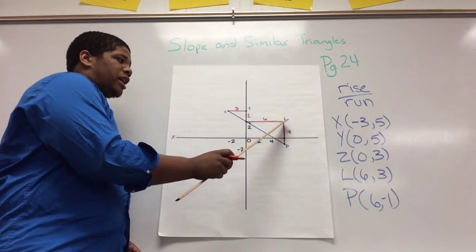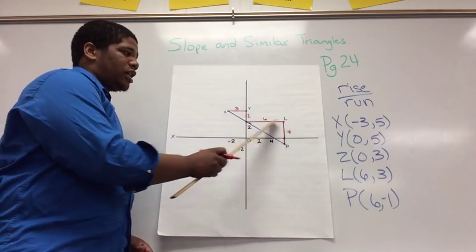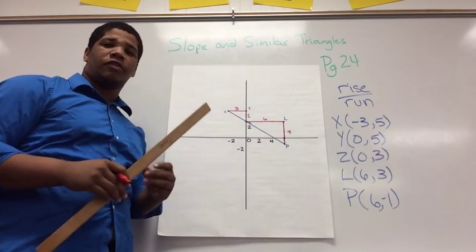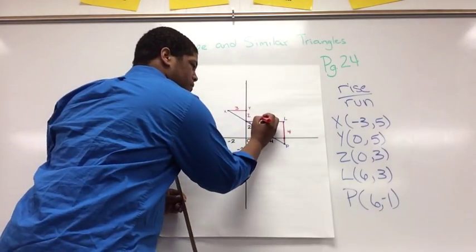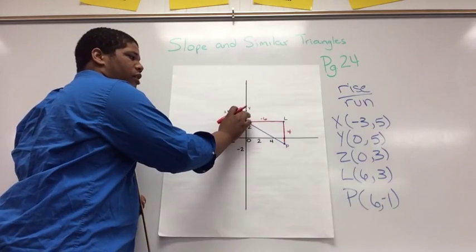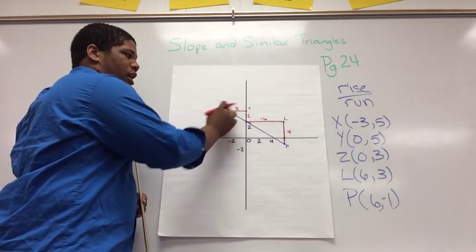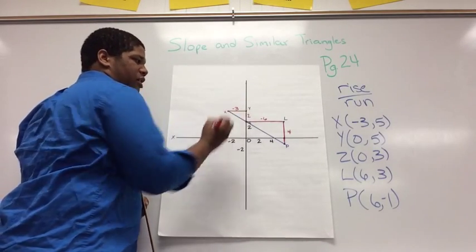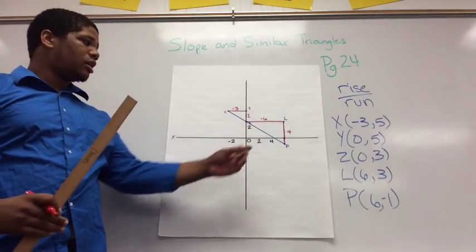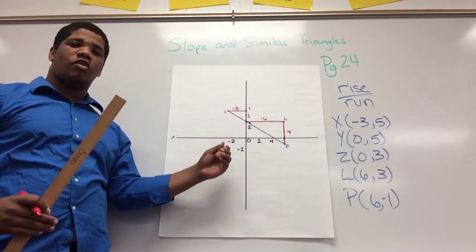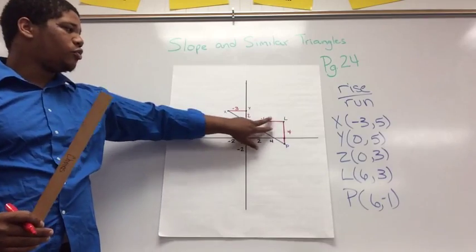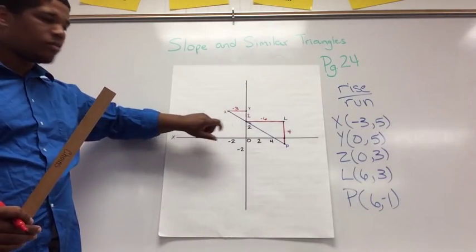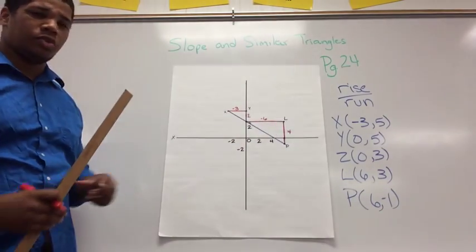First of all, notice that I did go left. So one thing that I did miss is if you go left, remember to put your negatives. So that's negative. And here, from Y to X, I also went left. So that has to be a negative. Also, notice that when I did my rise over my run, I made two right triangles. You should have two right triangles when you do this.